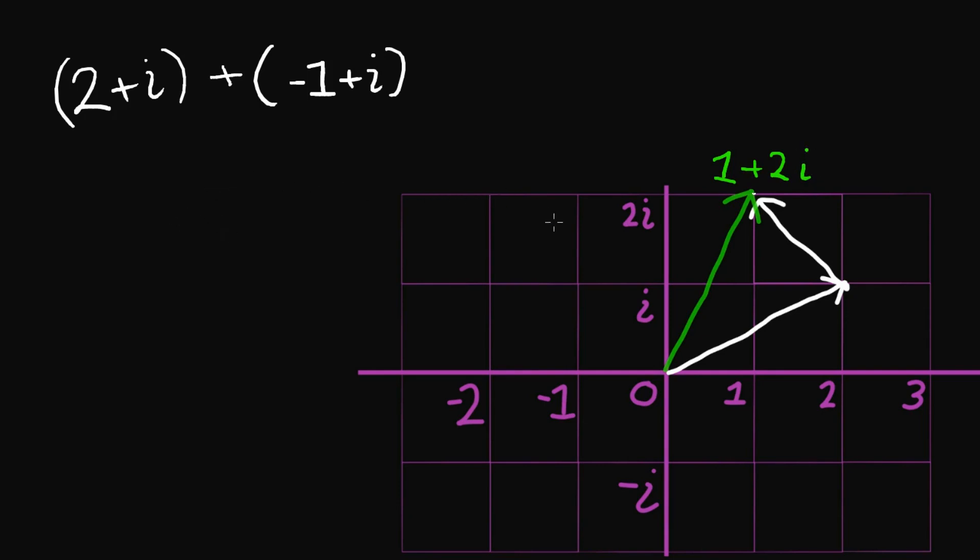So in practice you don't have to think about these arrows moving around. I just want to give you some sort of visualization. You could come over here and just do the algebra. And say well this is equal to, let me group up the real parts. So this is equal to 2 minus 1. So that's me grouping up the real parts. And then I'm going to group up the imaginary parts. i plus i.